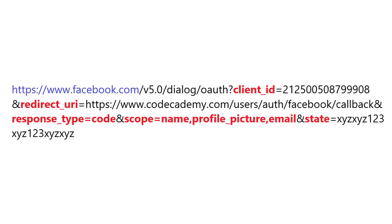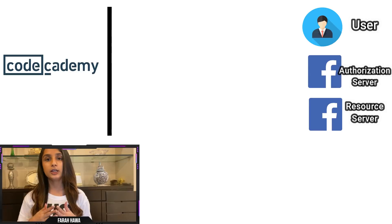First we have the client ID, which is a public identifier for Code Academy. Then we have the redirect URI with Code Academy's URL where the user will be taken after he logs in. Then we have the response type, which is 'code', meaning that Code Academy needs an authorization code from Facebook. Then we have the scope, which defines the resources that Code Academy needs permission for — here Code Academy needs the name, profile picture, and email address of the user from his Facebook account.